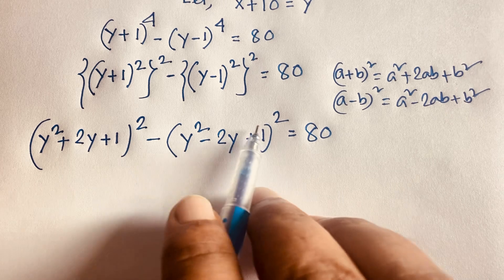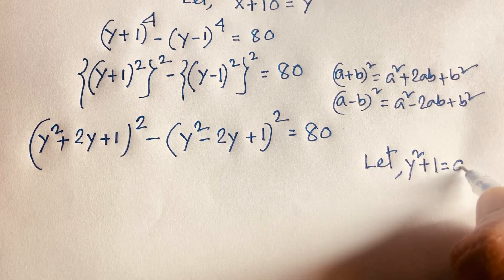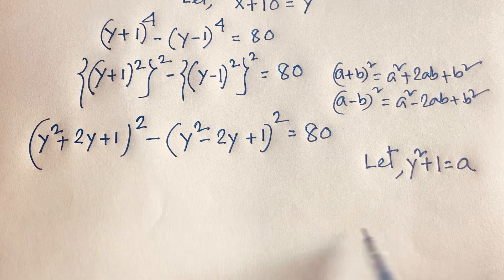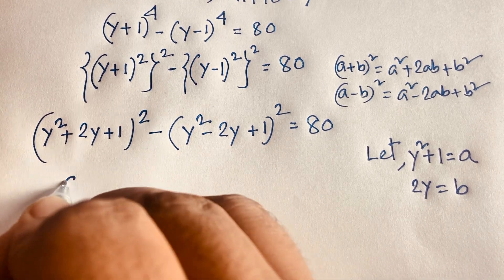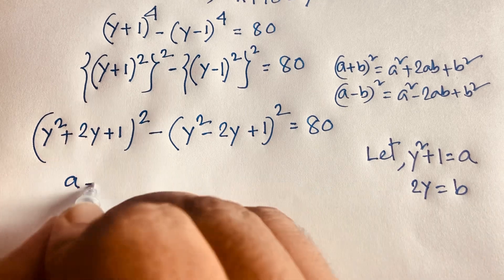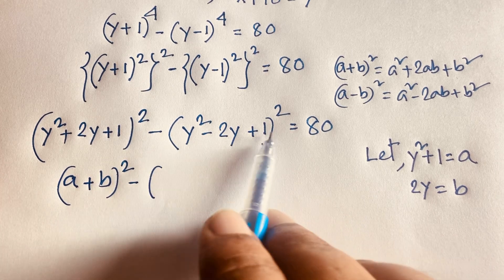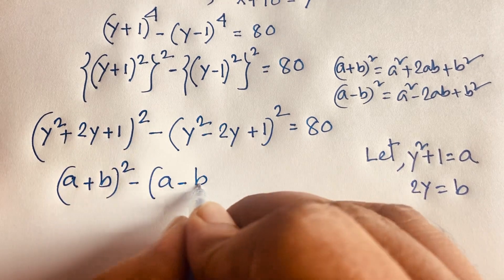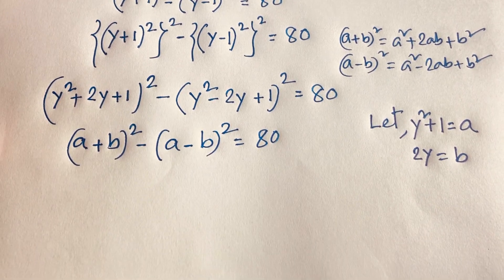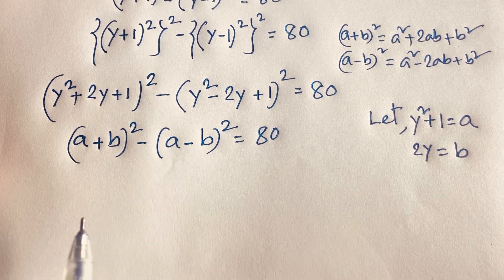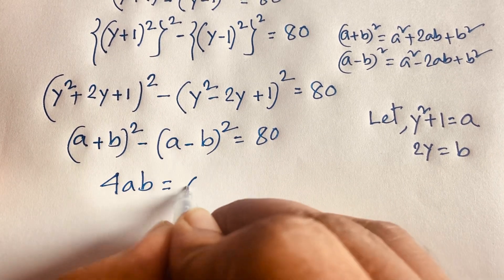I notice y² + 1 appears in both expressions. Let a = y² + 1 and b = 2y. Then the equation becomes (a + b)² − (a − b)² = 80. Using the algebraic rule (a + b)² − (a − b)² = 4ab, we get 4ab = 80.